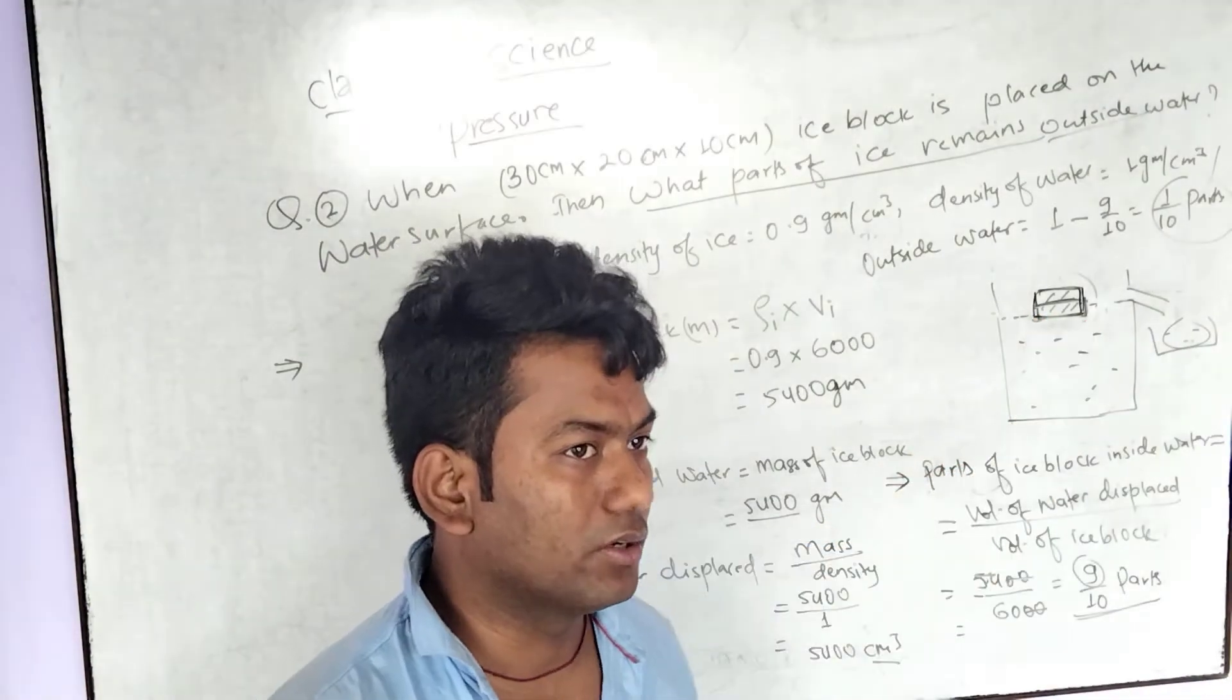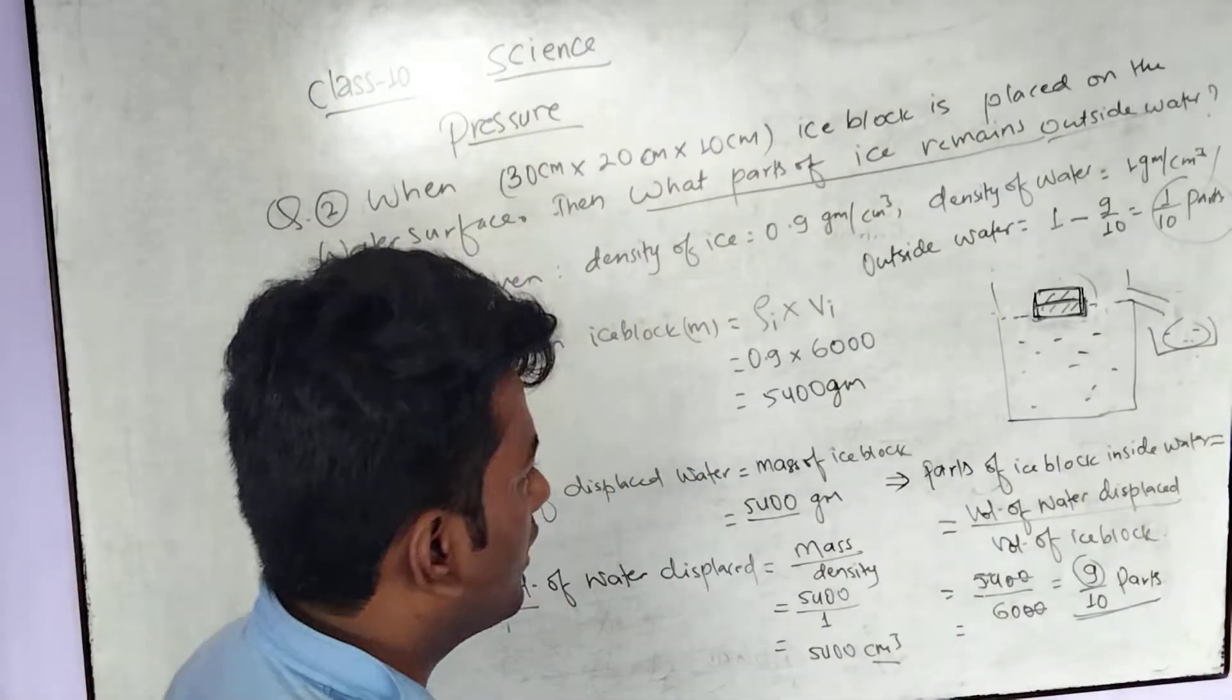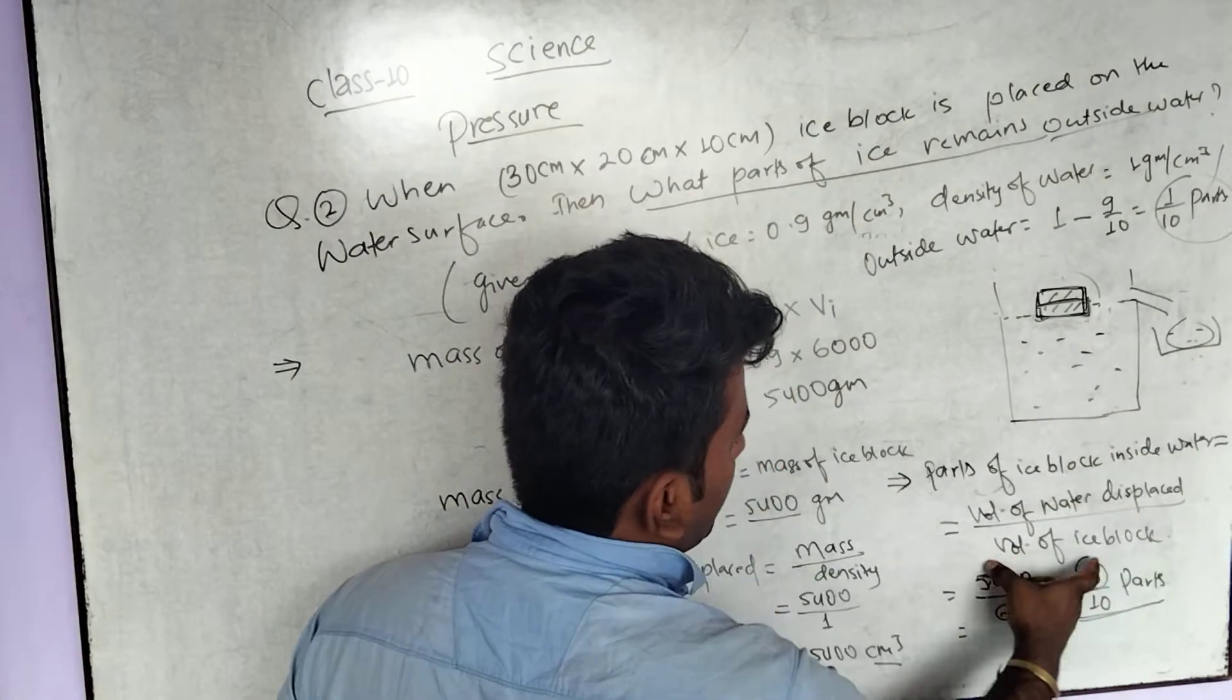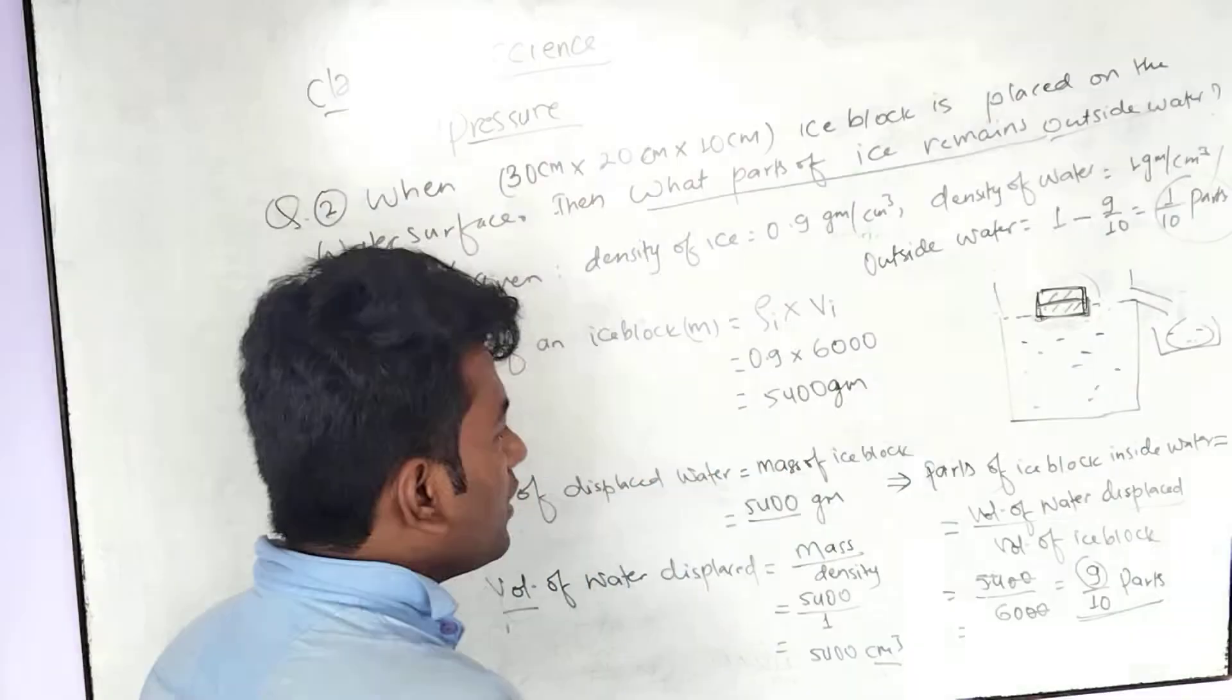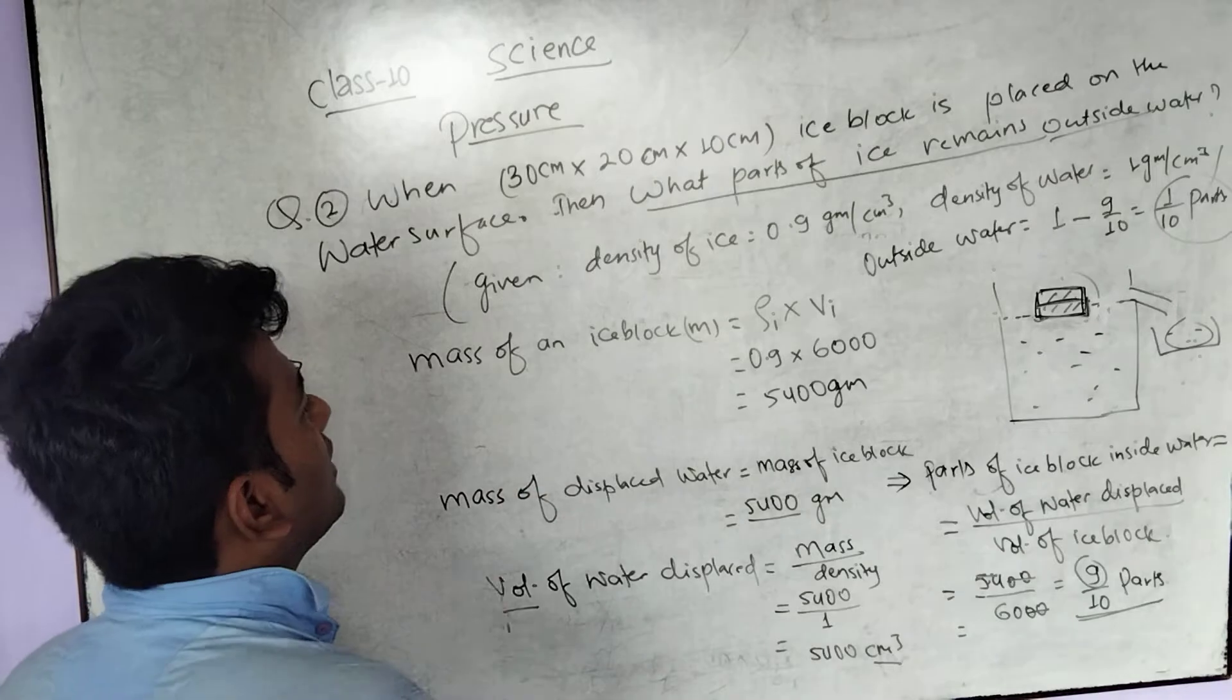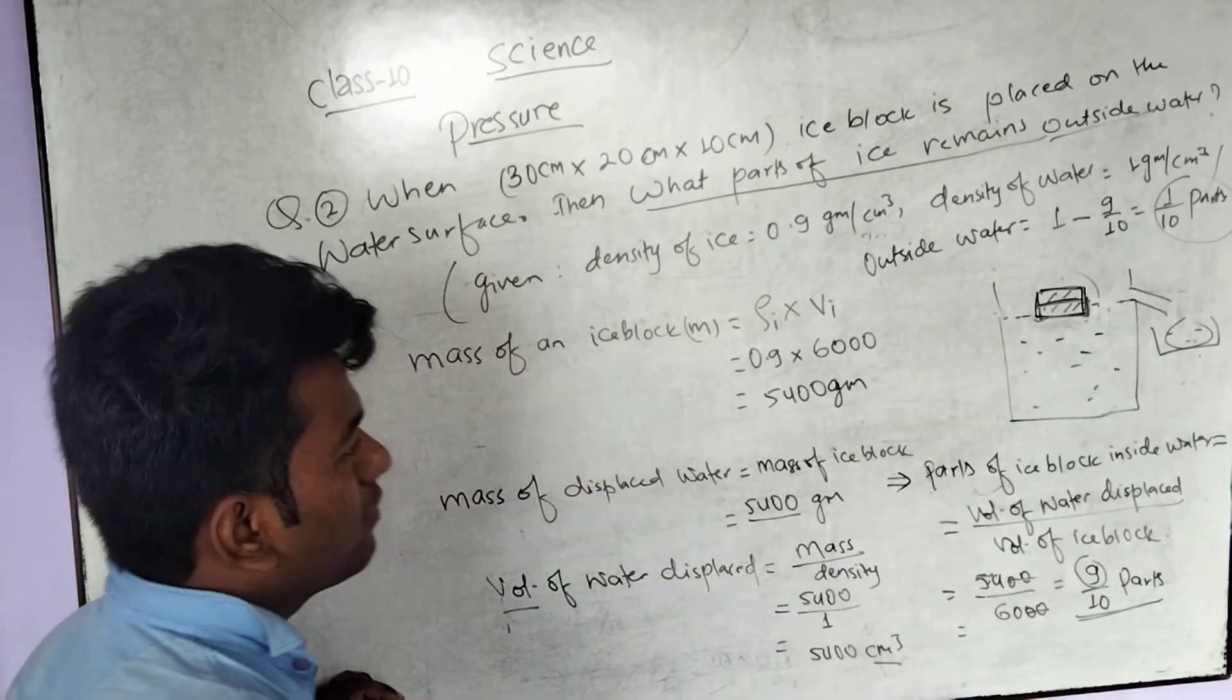So, the ice block is floating. The volume of water is displaced by the ice block. What do we need to do with displaced water? First of all, we need to find the mass of the ice block.